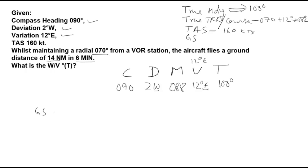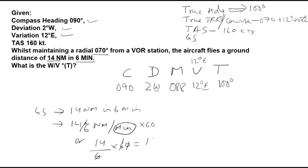So ground speed, we have that the aircraft travels 14 nautical miles in 6 minutes. So we have its velocity or speed as 14 by 6 nautical miles per minute. Multiply, because this is minutes, multiply by 60 to get hours. So it will be 14 divided by 6 into 60, equals 140 knots, which is our ground speed.